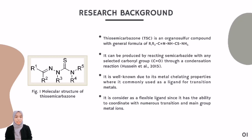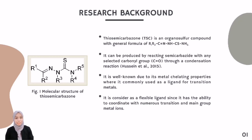TSC is commonly used as a ligand for transition metals. It is well known among researchers due to its chelating properties, allowing them to create metal complex compounds with special geometries. It is also considered a flexible ligand since it has the ability to coordinate with numerous transition and main group metal ions. It has also been reported by Morady and Zaire in 2018 that metal thiosemicarbazone complexes have discovered few applications in biology.